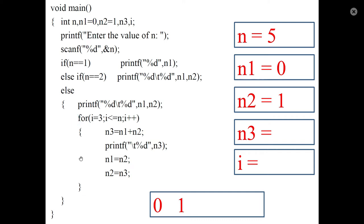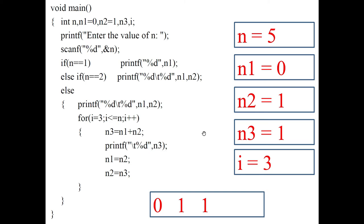To display the remaining numbers, use a for loop from i equal to 3 to N, generating each number one by one. Initially i equals 3, so the condition i less than or equal to N — 3 less than or equal to 5 — is true. So N3 equals N1 plus N2, which is 0 plus 1 equals 1.